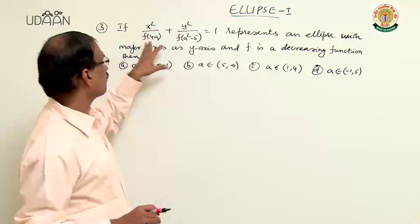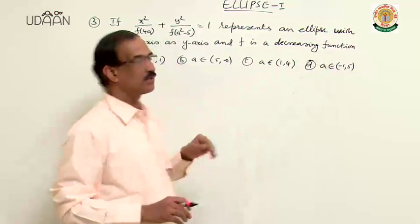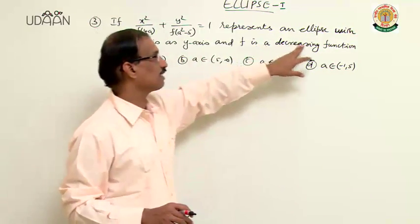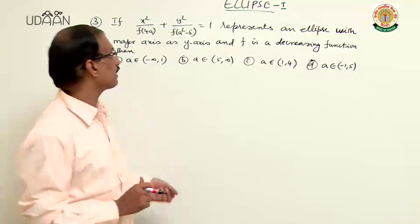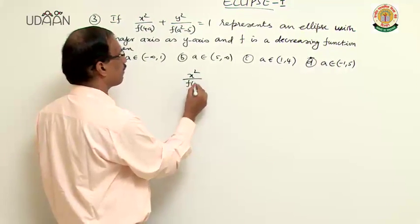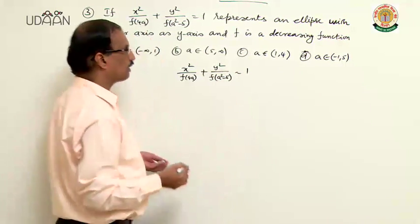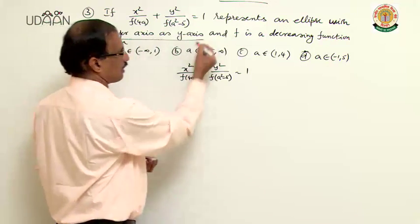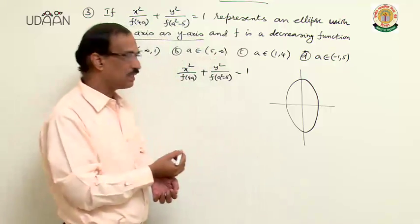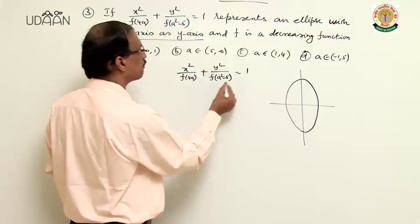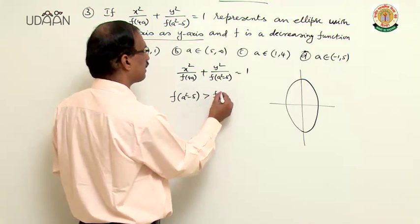Question 3: If x²/f(4a) + y²/f(a²-5) = 1 represents an ellipse with major axis as the y-axis and f is a decreasing function, find the interval for a. Given that the major axis is the y-axis means f(a²-5) > f(4a).